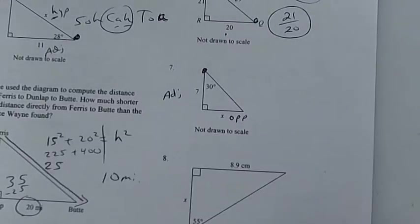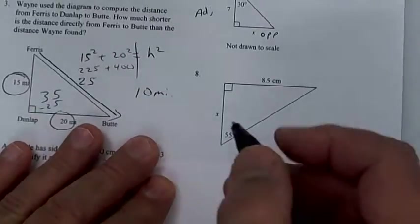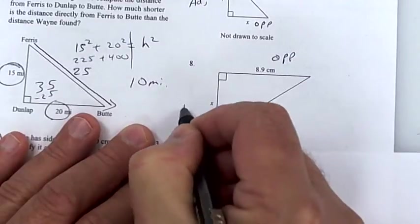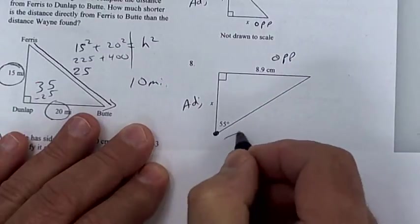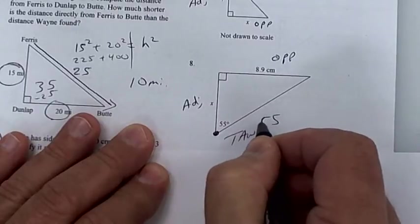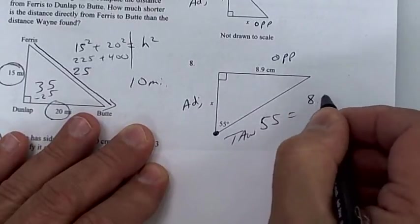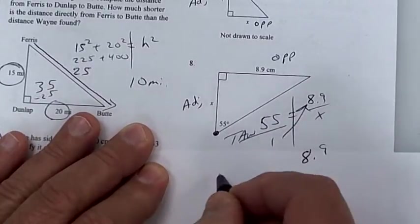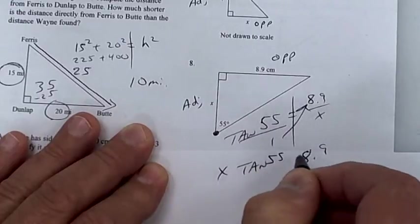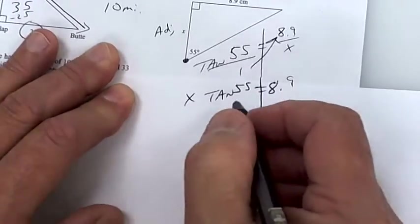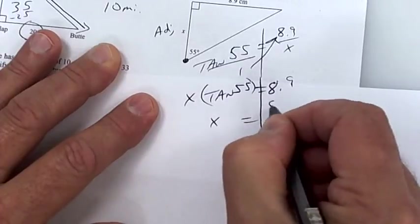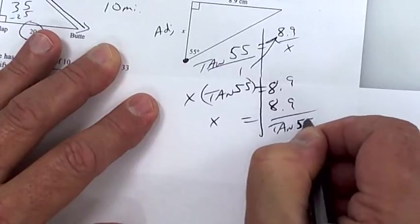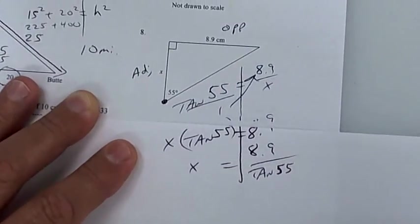Number 8 — stand right here, that's where the angle is. This is opposite, this is adjacent, so that's tangent. It's the tangent of 55 degrees is equal to opposite over adjacent. Put a 1 under here, so you're going to get 8.9 here, and then x times the tan of 55. Divide by the tan of 55 — so x is equal to 8.9 divided by the tangent of 55 degrees.